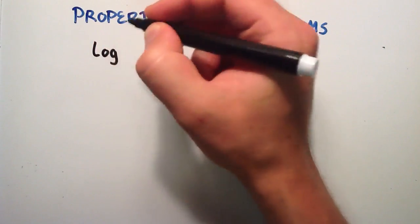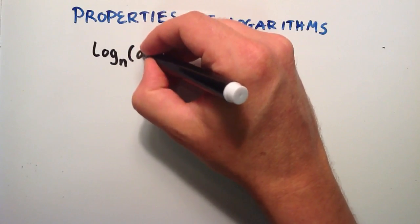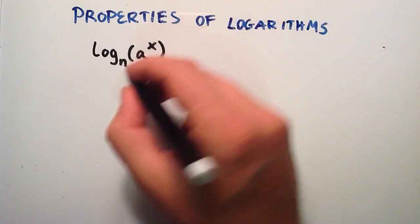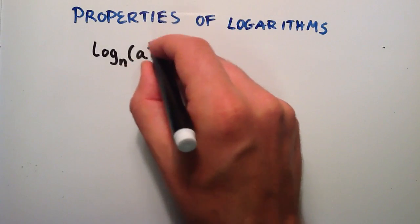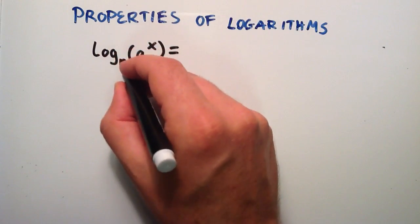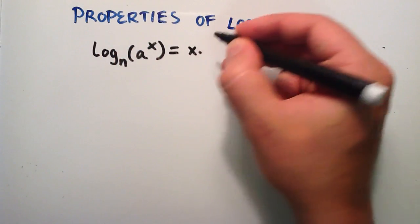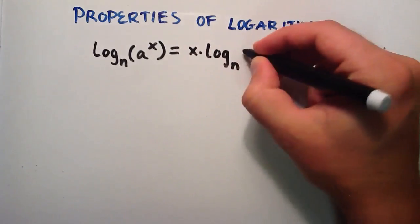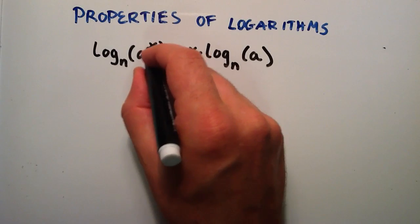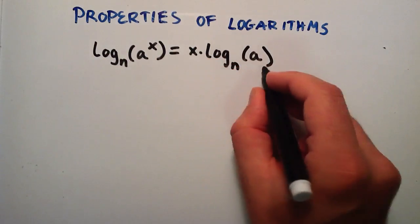If we have a logarithm of base n, and inside the argument we have some number a raised to the x power, we can rewrite this by taking this exponent and moving it out front. So log base n of a to the x can be rewritten as x times log base n of a. All I did was take this x and move it out front, and everything else stayed in the same spot.